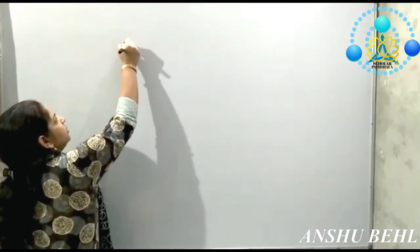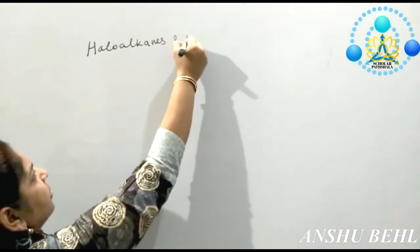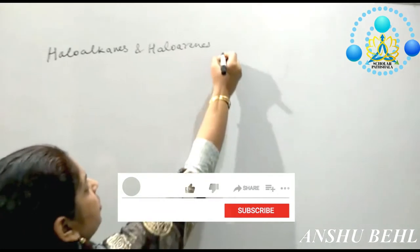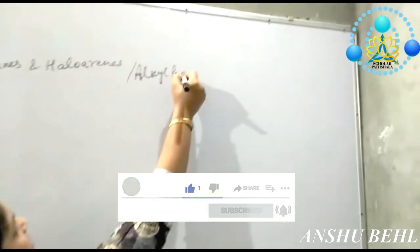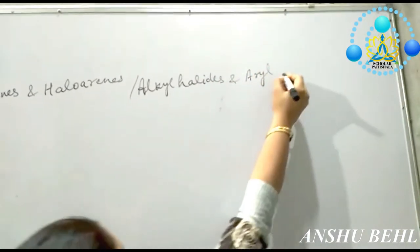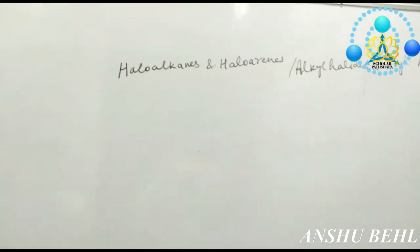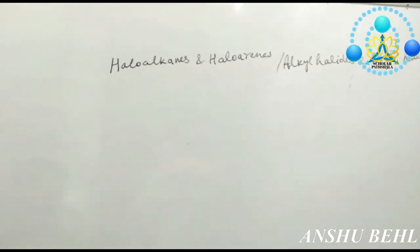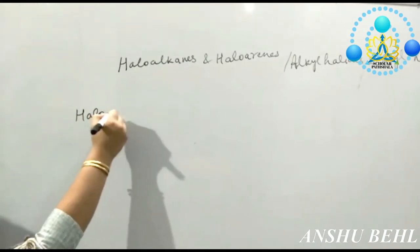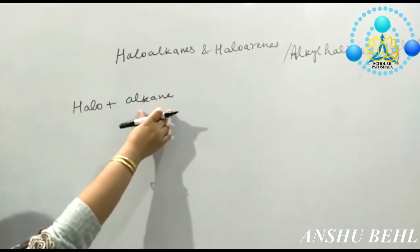Today we are going to start with the topic Haloalkanes and Haloarenes. This is also called as alkyl halide. The word 'halo' means halogen and 'alkane' means alkyl group. So here you can write it as halo plus alkane. You can write any halogen along with any alkane series.